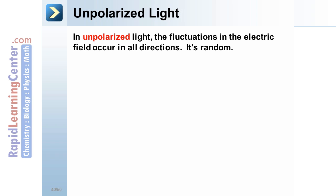Unpolarized light. In unpolarized light, the fluctuations in the electric field occur in all directions. It's random. As you can see here, the light beam goes one way, but those various electric field fluctuations occur in many directions.